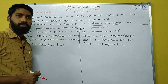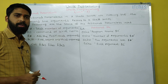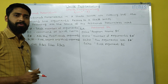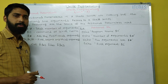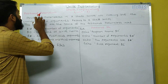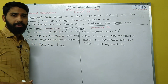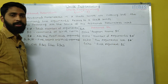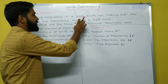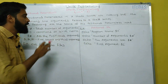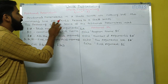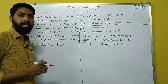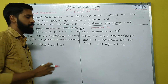Hello friends, welcome to Unix programming tutorials. In this class, we are going to learn about positional parameters. Positional parameters in a shell script are nothing but the command line arguments passed to a shell script.